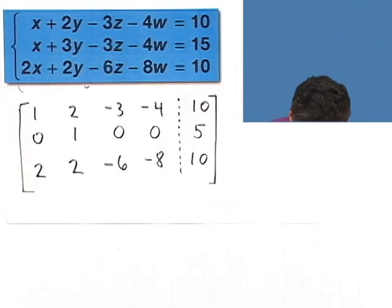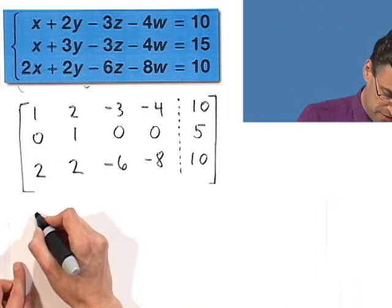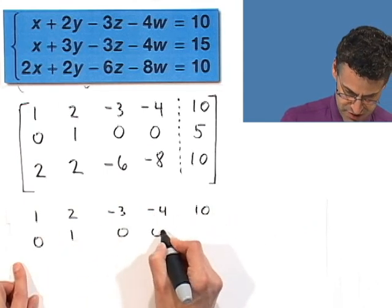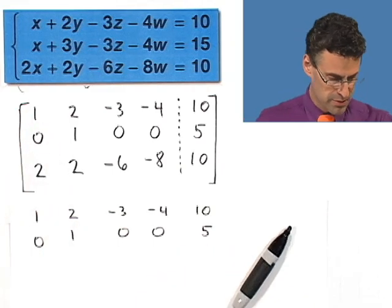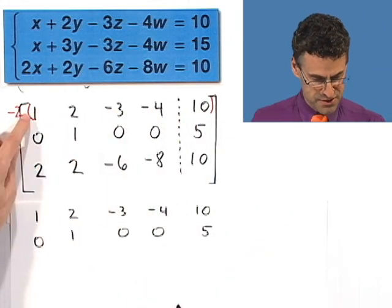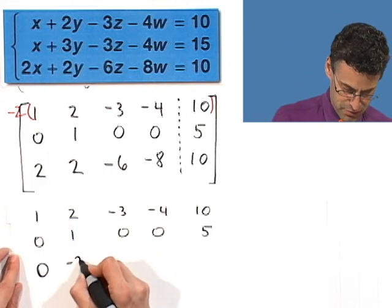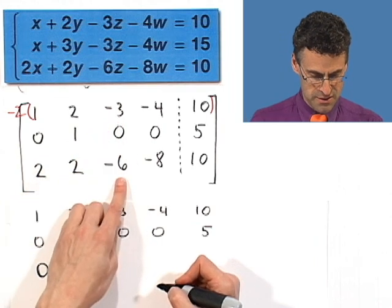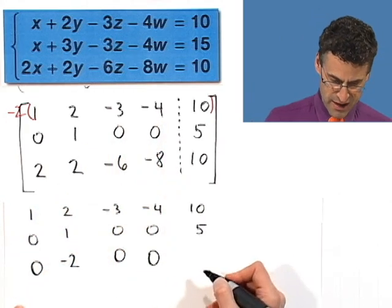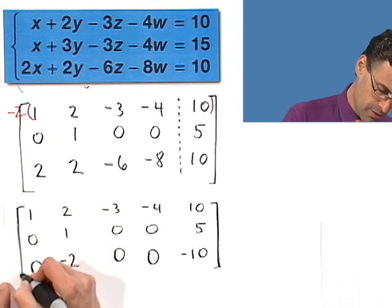So now how would we simplify this a little more? Well, I'm going to simplify by replacing that third row by negative two times the first one plus the third one. So I'll keep everything else the same. One, two, negative three, negative four, ten, zero, one, zero, zero, five. And then negative two, don't tell anyone I'm doing this. And then we'll add to this. So it's negative two and two is zero. Negative four plus two is negative two. This is six plus negative six is zero. This is going to be eight plus negative eight is zero. I'm liking all that. And then here I see negative 20 plus 10 is negative 10. So that's my new augmented matrix.